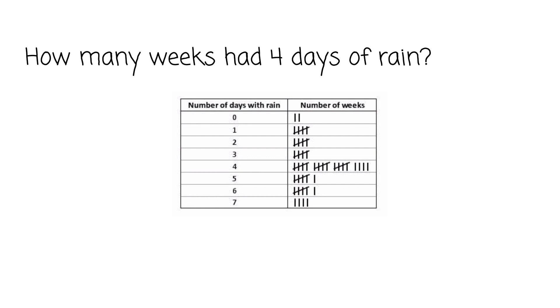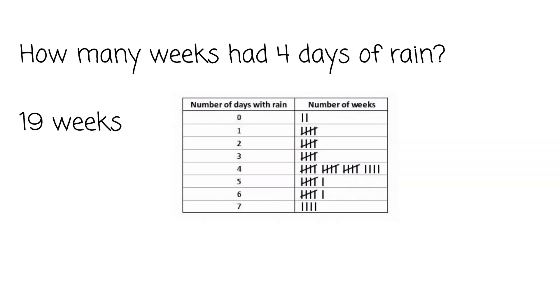So let's look at this example. Here we've got a tally chart and I want you to try to figure out how many weeks had four days of rain. So pause, figure that out, and then you can play to find out the answer. So if you said 19 weeks had four days of rain, you are correct.